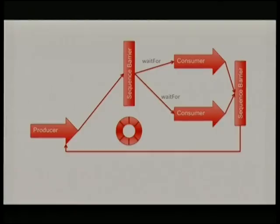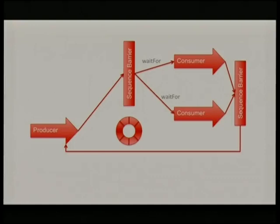Having sequence barriers as a fairly separate concern means we can start doing more complex structures. We can have two consumers reading from the same ring buffer, and they will both immediately process in parallel the events once the publisher makes them available — they're both waiting on the same sequence barrier. Similarly, the sequence barrier preventing the producer from overrunning them is waiting for both consumers to reach the expected point — basically doing a min of their sequence numbers.